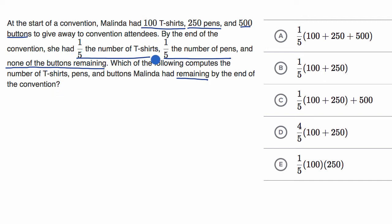One way is to just try to come up with an expression that would describe the number of T-shirts, pens, and buttons Melinda has by the end of the convention and see if that is equivalent to any of these expressions.